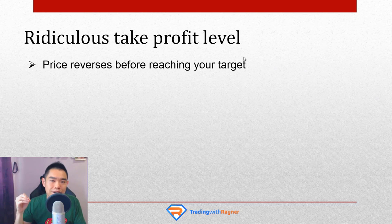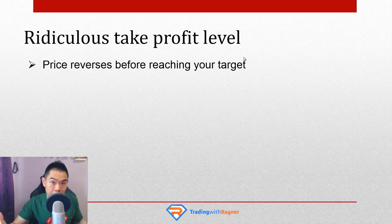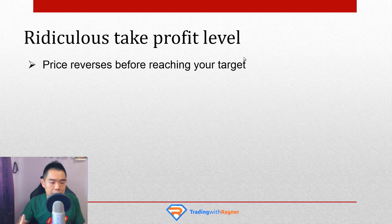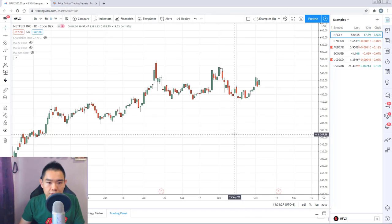Mistake number one: you have a ridiculous take profit level. When you have take profit levels which are not realistic, what's going to happen is that you will see the price moving in your favor, near to your take profit level, before it reverses and then hits you for a loss. If that happens to you, let me explain why that occurs and how you can prevent it.